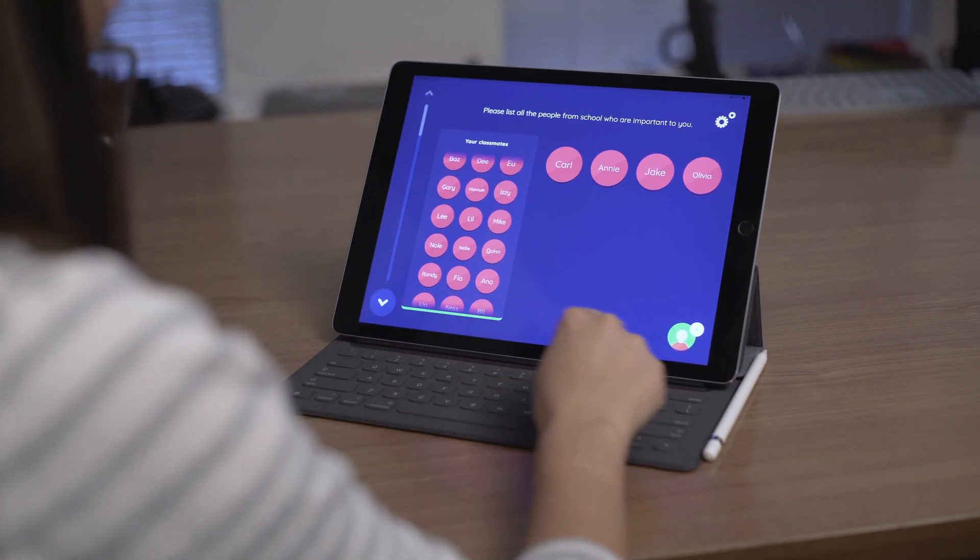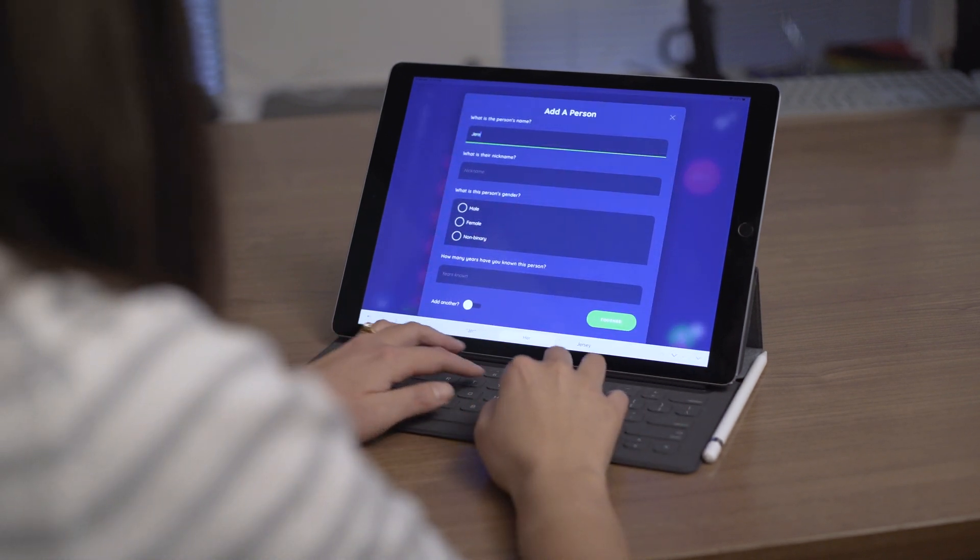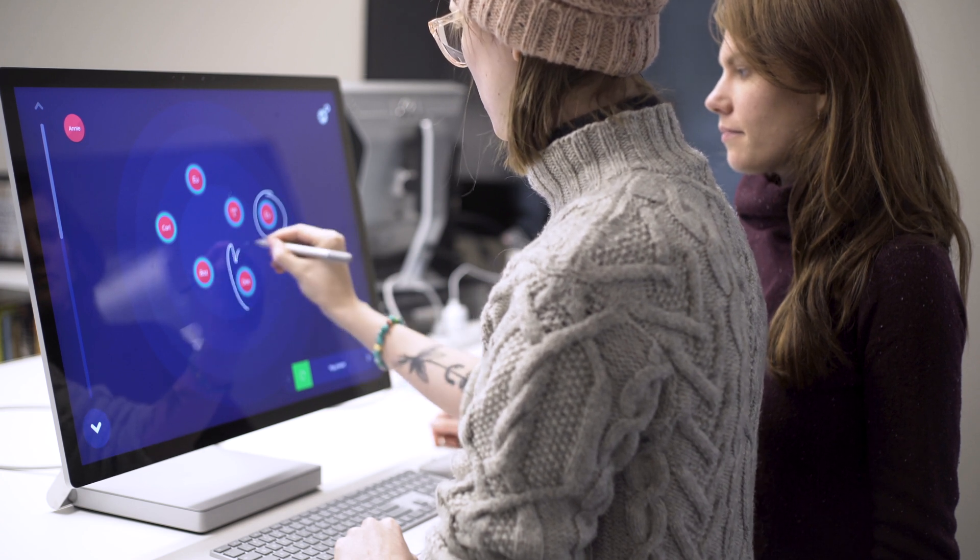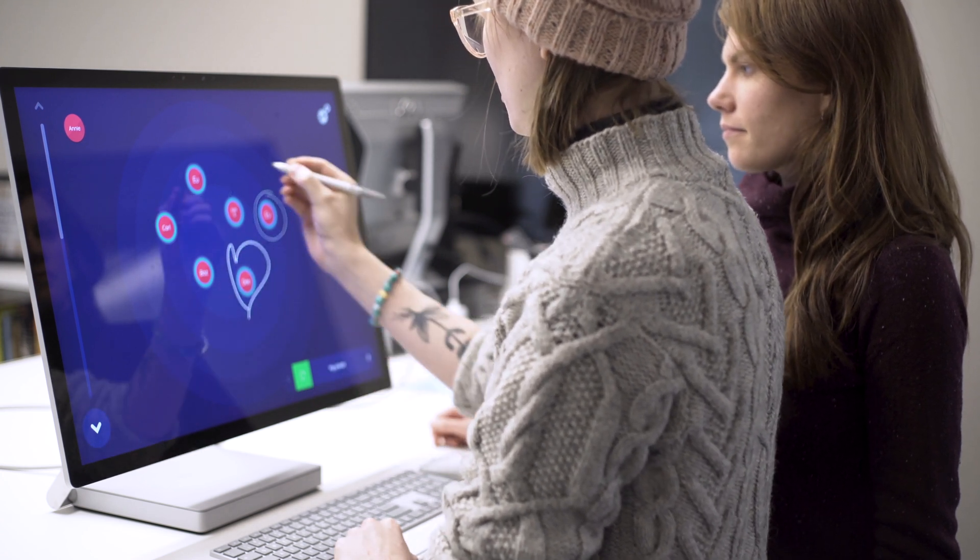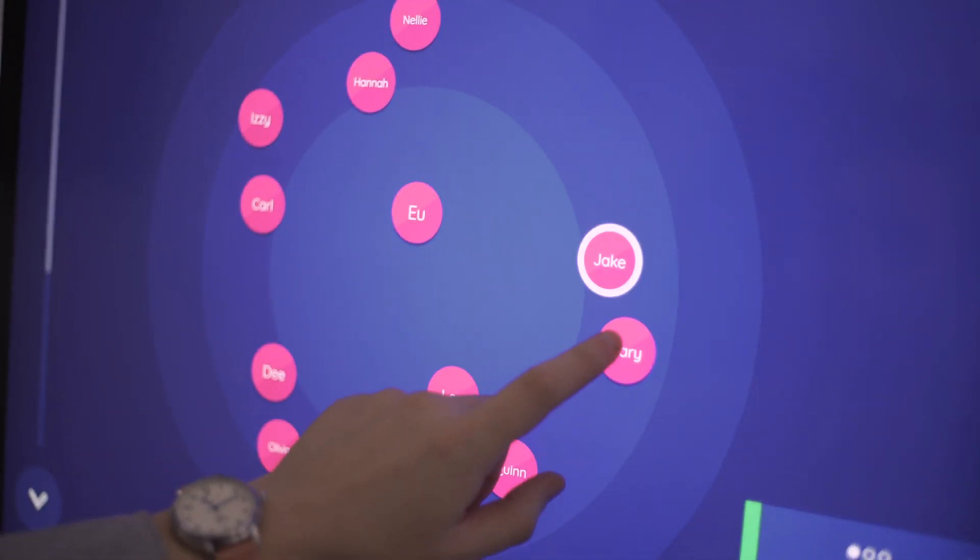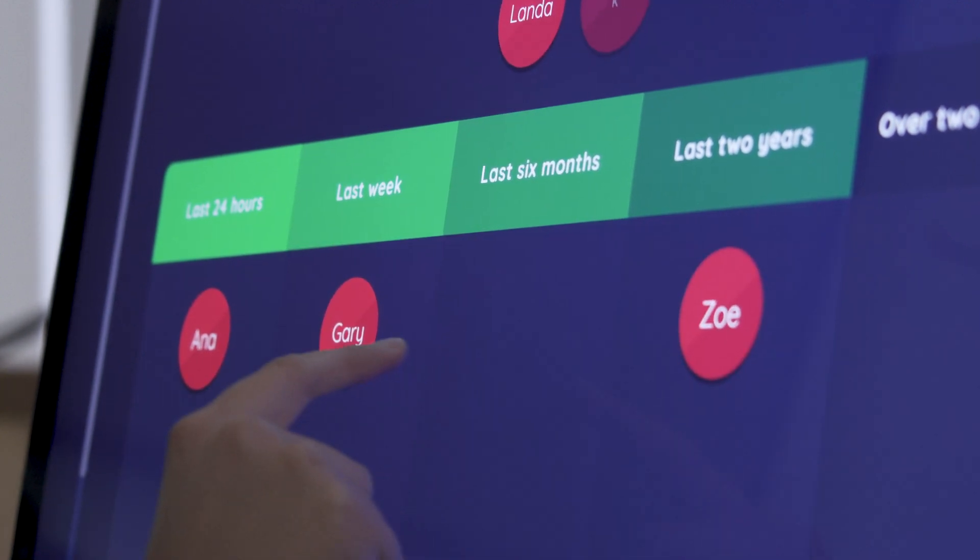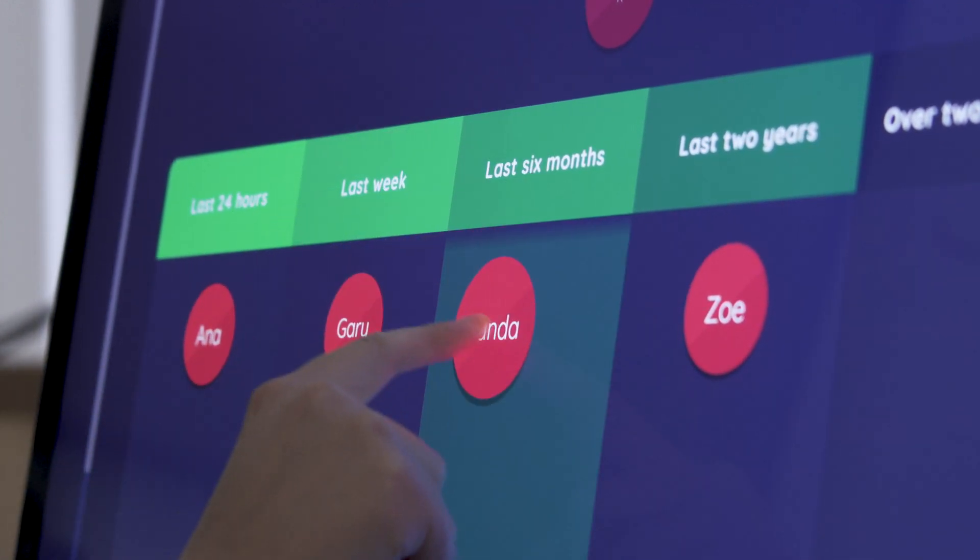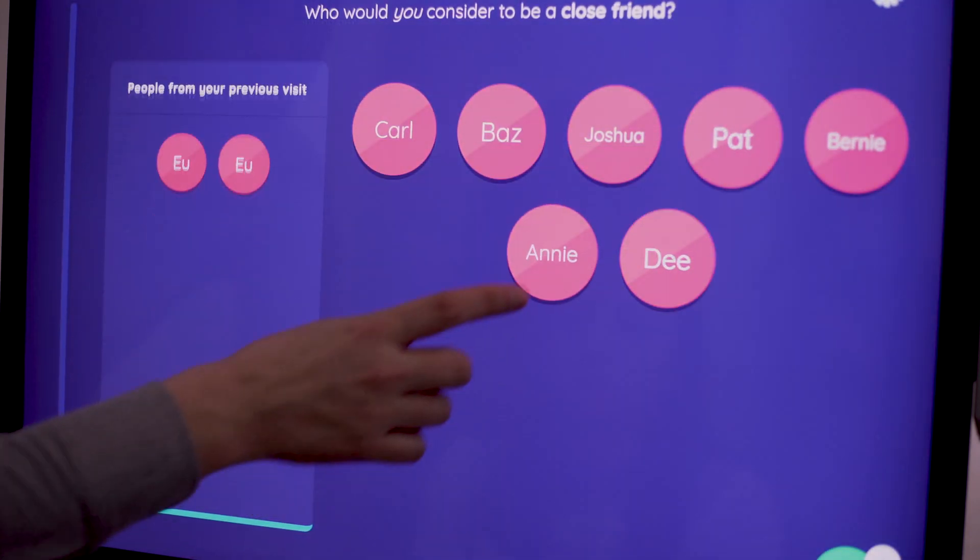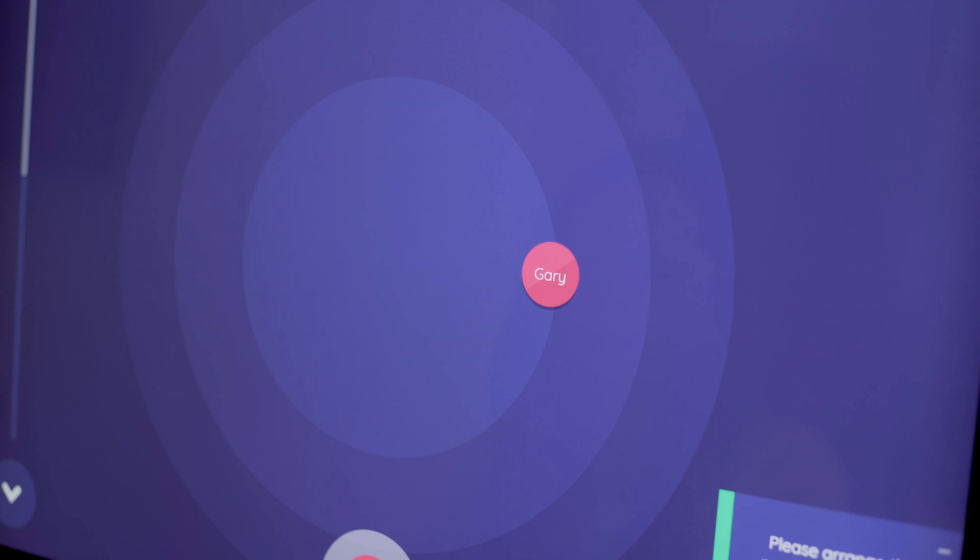The Network Canvas app is where your participants will complete your study. Designed around the face-to-face interaction between interviewer and participant, the app runs on a wide variety of devices, including tablet and desktop computers. Each interface your participants see has been specifically designed around the data collection requirements of a network interview. Our interfaces are strongly visual and use consistent interactions such as dragging and tapping to collect high quality data without high response burden.